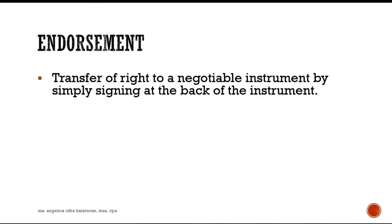B signs and endorses the promissory note, then passes it to the bank. The bank now becomes the new payee. So A, who originally owed B, is now liable to the bank. B, the original payee, transfers the right to the bank. So the bank will then issue money — the proceeds — to B, which we will compute later on.